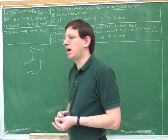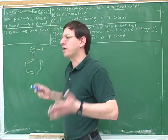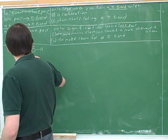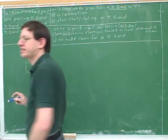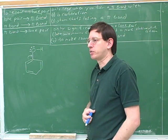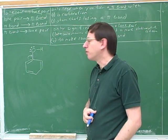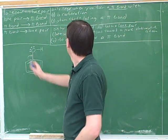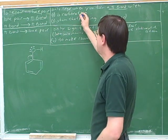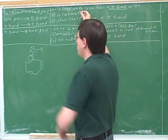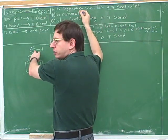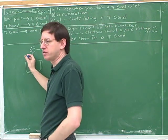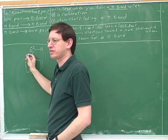We need to draw all the resonance structures here. One thing you might think about doing is this arrow — but is this arrow going to work for us? Why not? Well, we're forming a pi bond, but we're not forming a pi bond with the carbocation, and there's no way this can lose it. There's no way this can lose a pi bond since it doesn't have any pi bond.